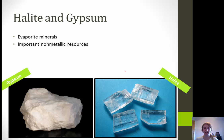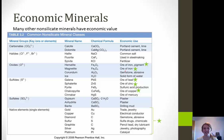Next we have halite and gypsum — what we consider evaporite minerals. These formed as water came in and either a temperature change or dropping water levels caused these minerals to be deposited. These are important non-metallic resources: gypsum is typically used in drywall, and halite — of course — is salt, so if you licked it, it would taste salty.